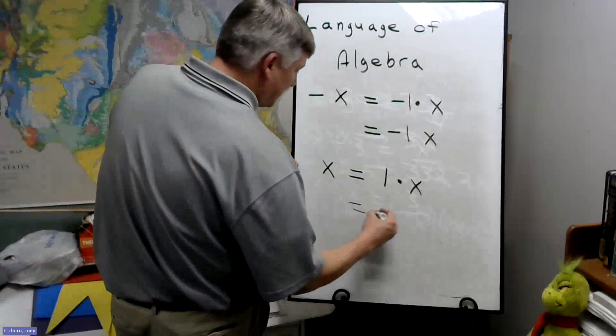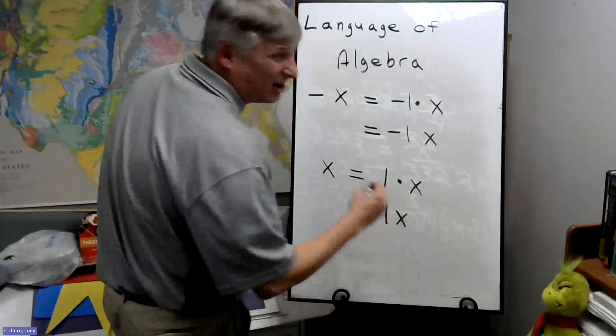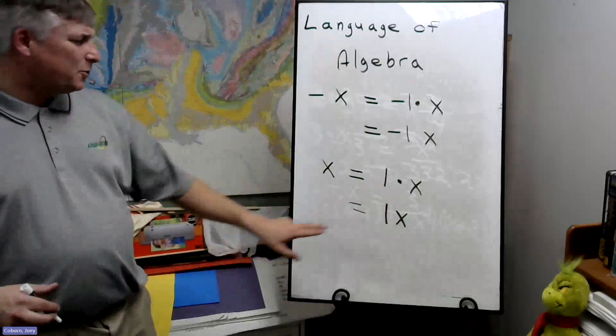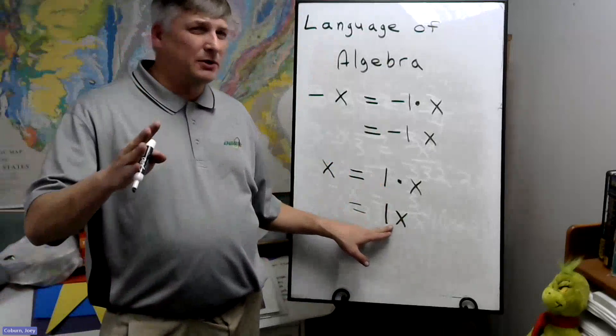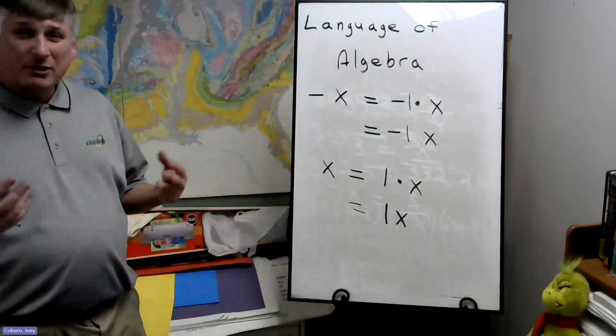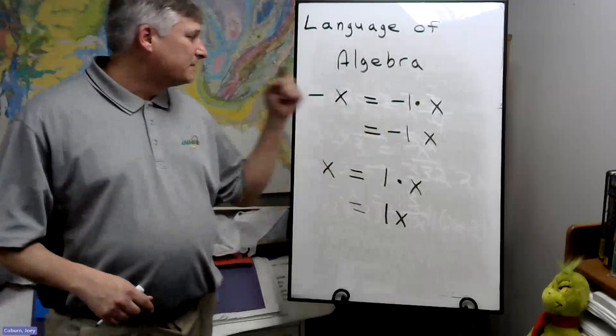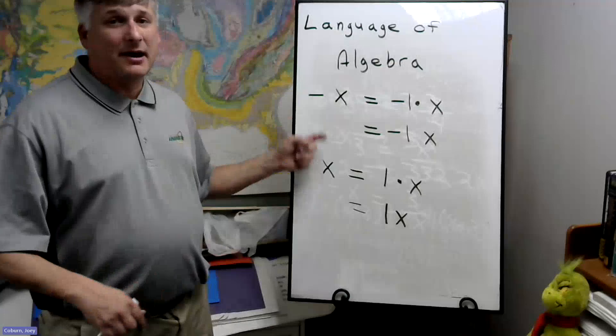So we'll sometimes write this as one X, but not often. If you have one X, what they're going to want you to do is write it like this. Likewise, if you have negative one X, they're going to want you to write it like that.